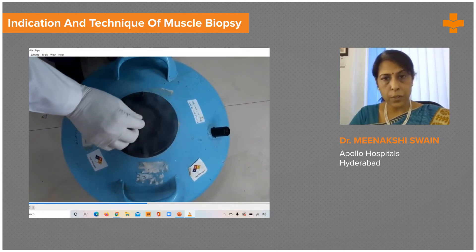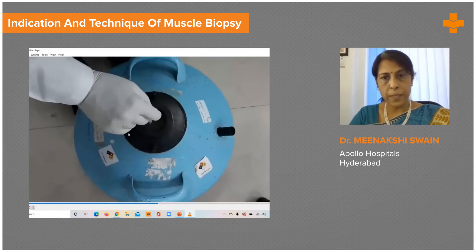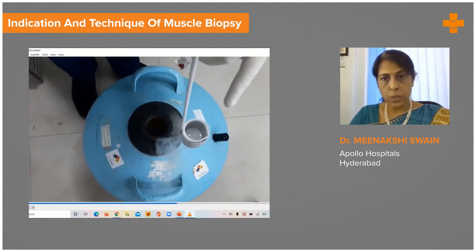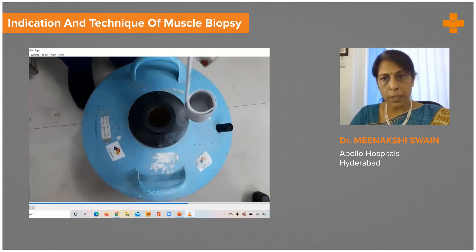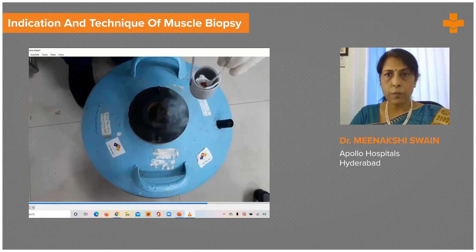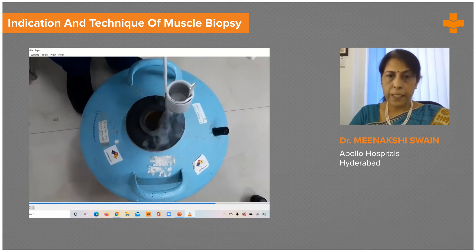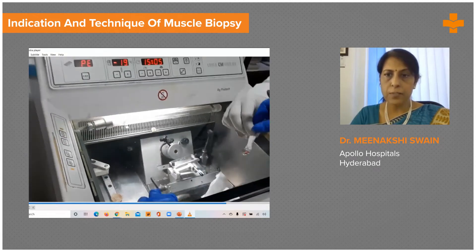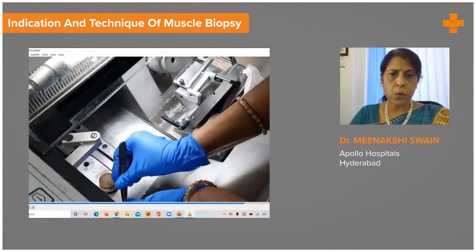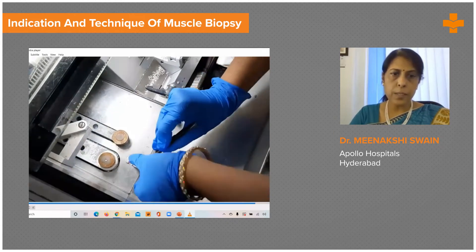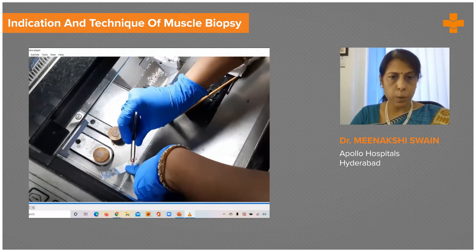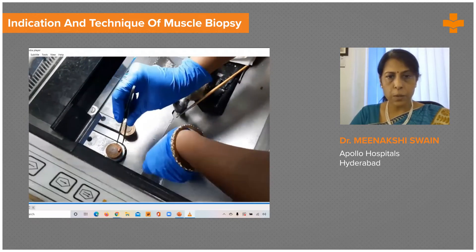In about 20 to 30 seconds, the isopentane is frozen, with a solid phase at the bottom and a liquid phase at the top. It's very important to stir the isopentane so that the temperature is uniform throughout. The muscle, held on silver foil, is then dipped in for snap freezing, which hardens the tissue and preserves enzymes and other chemicals without degeneration. The biopsy is then placed in a cryostat — one can use the freezing medium OCT — and sections are cut.